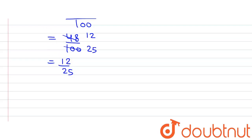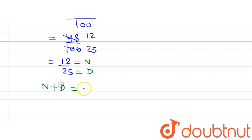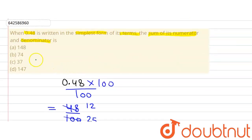In the simplest form 12/25, the numerator is 12 and the denominator is 25. So numerator plus denominator equals 12 + 25, which equals 37. That is the sum of the numerator and denominator.